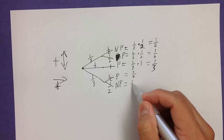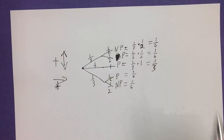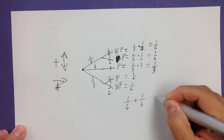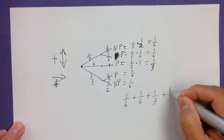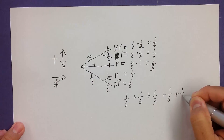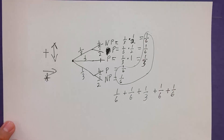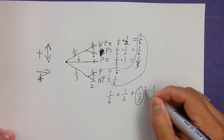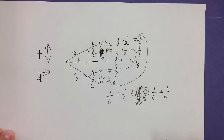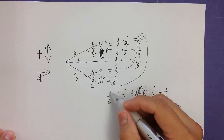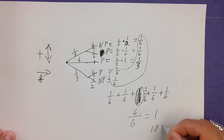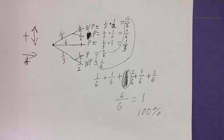Now let's check if this works out — everything has to add up to 100%. So one-sixth plus one-sixth plus one-third plus one-sixth plus one-sixth. The one-third equals two-sixths, so in total: one plus one plus two plus one plus one equals six over six, which equals one. That means 100%. So we get them all — the probabilities are verified.